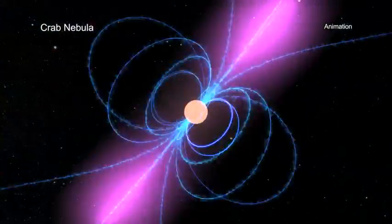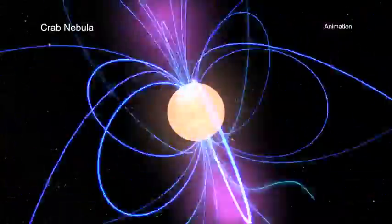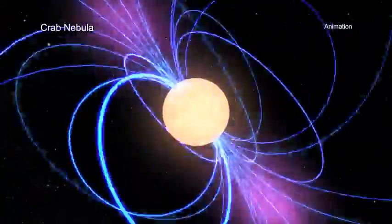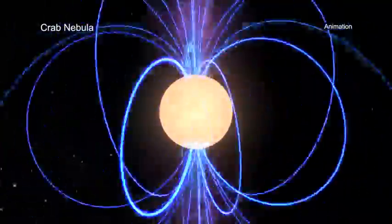Today, astronomers know that the Crab Nebula is powered by a quickly spinning, highly magnetized neutron star called a pulsar, which was formed when a massive star ran out of its nuclear fuel and collapsed.